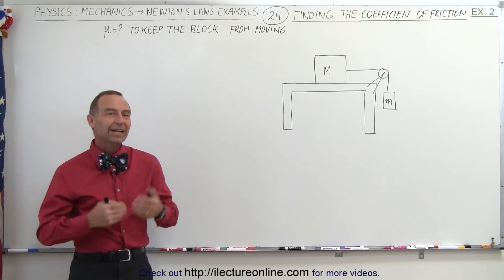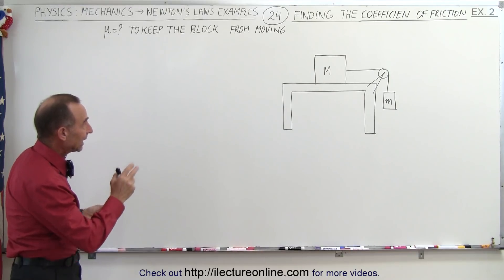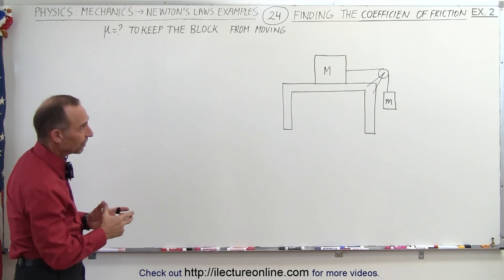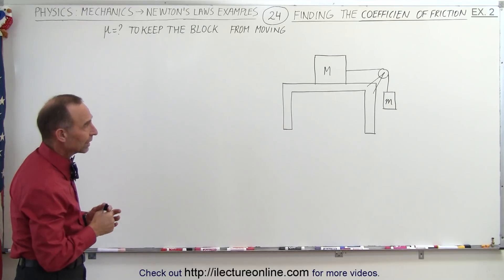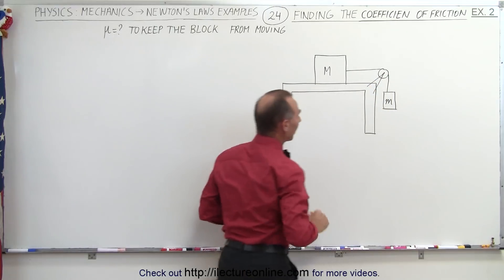Welcome to Electronline! Our next example where we need to find the static coefficient of friction is comprised of a system of two blocks: a big block on the table and with a string attached to a smaller block that's trying to pull the big block to the right.